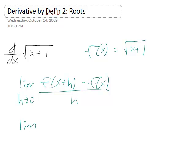So that means that the limit becomes square root of x plus h plus 1 minus square root of x plus 1 over h.